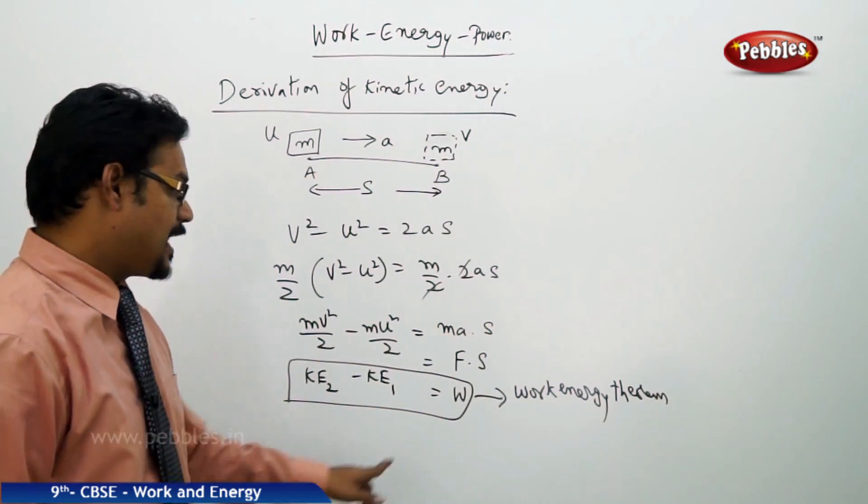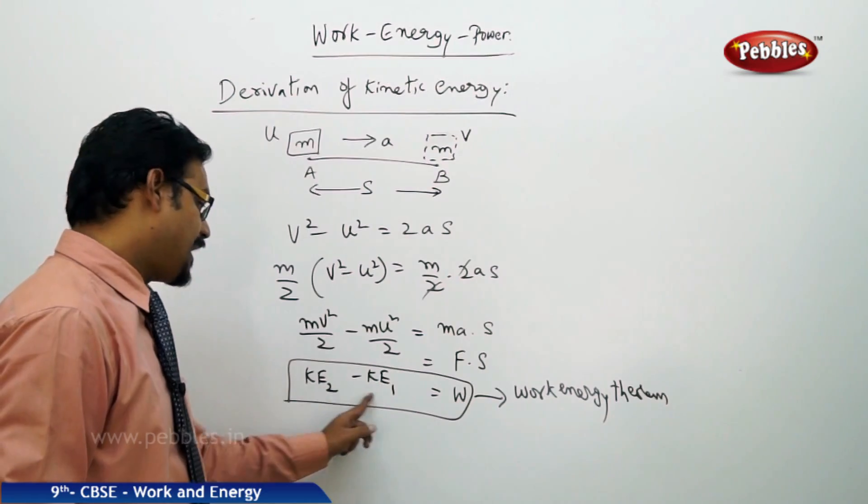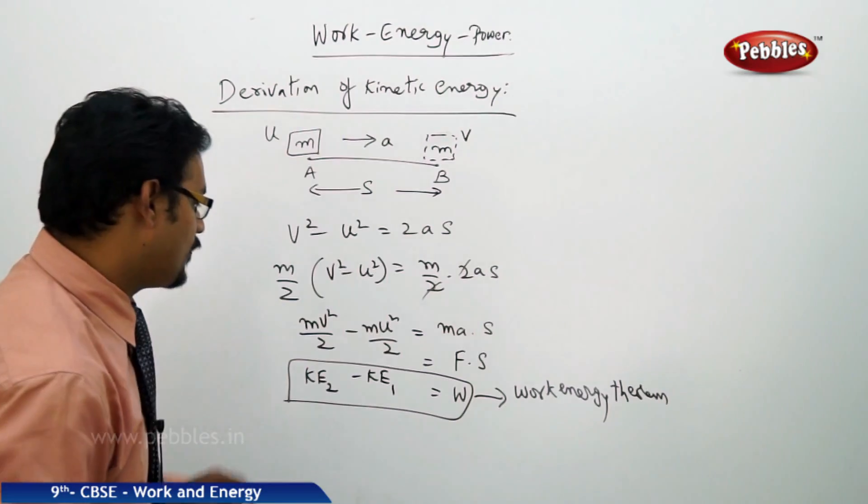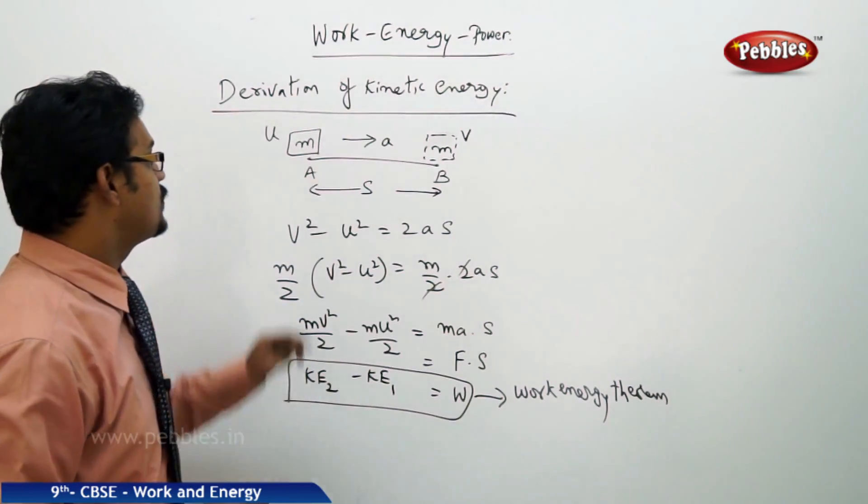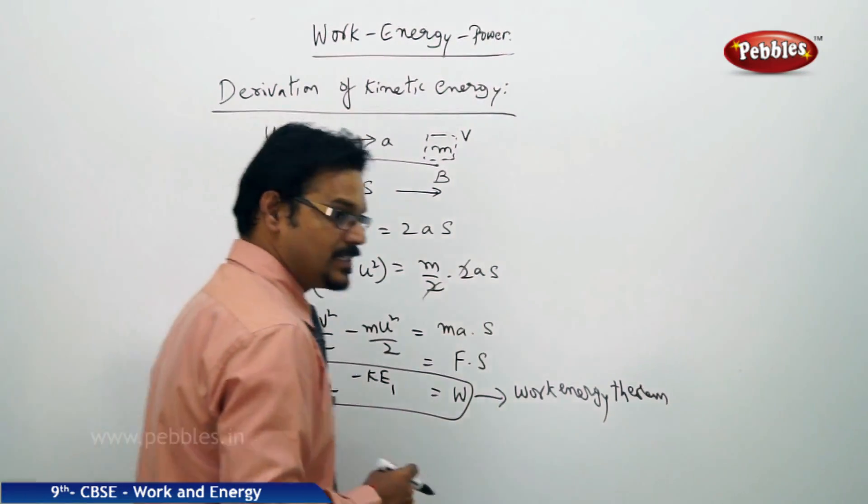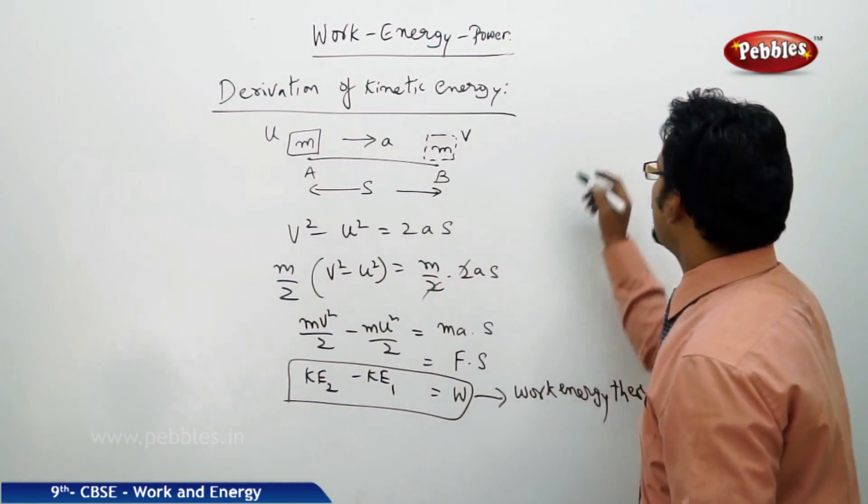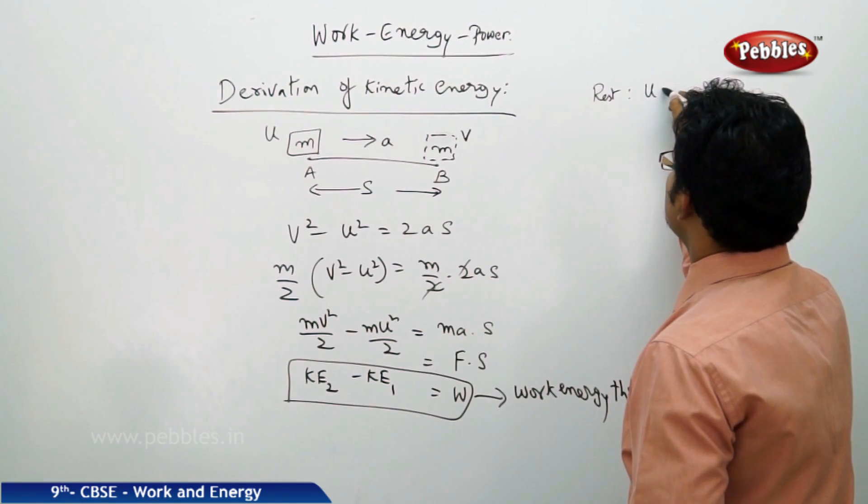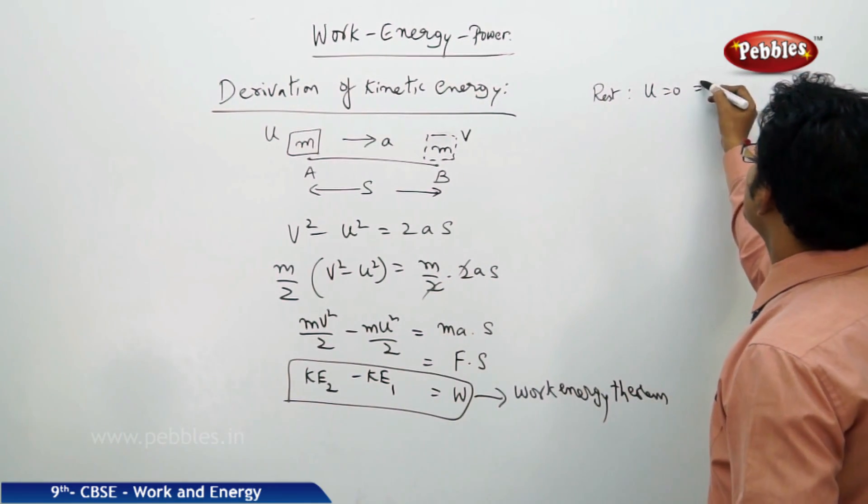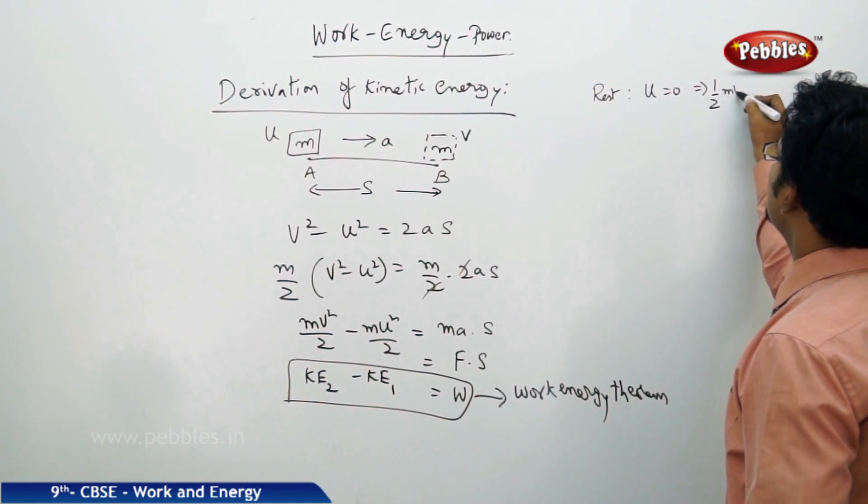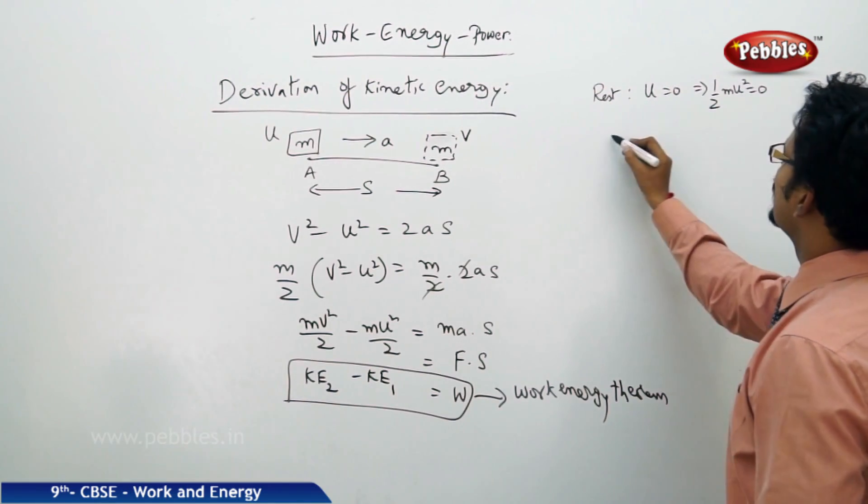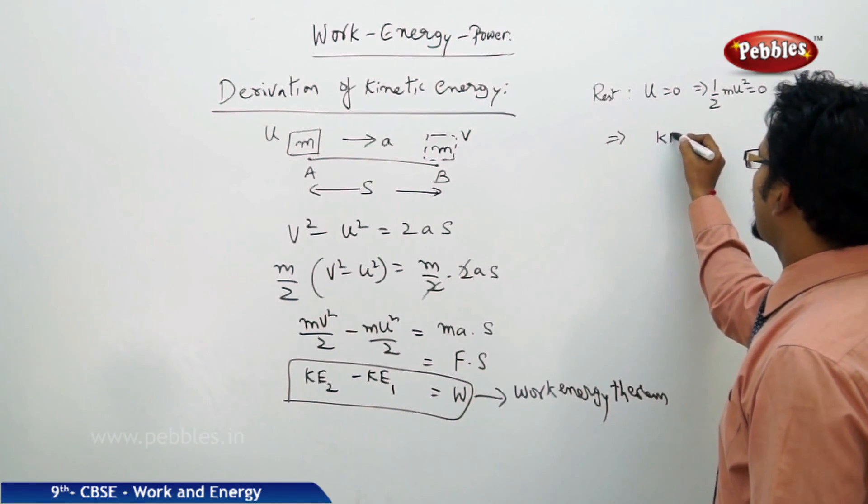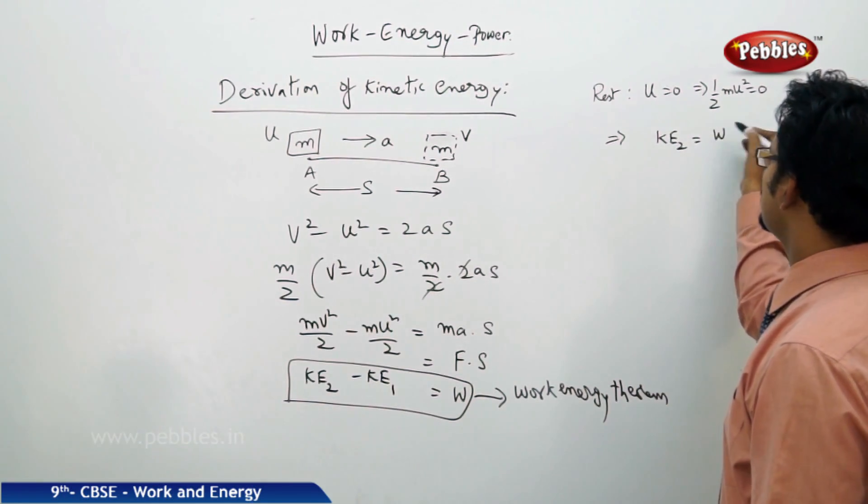It says the amount of work done is change in kinetic energy. Our concept is we need to derive the kinetic energy formula. In this let us assume that the body starts from rest, initial velocity U equal to 0, implies half mu squared equal to 0.